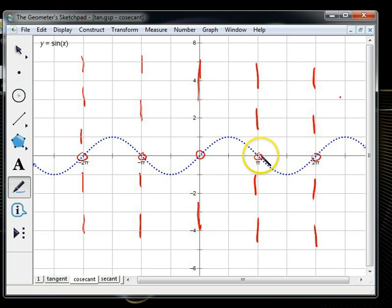Now between 0 and pi, sine is increasing and decreasing, but it's positive, so the reciprocal will do the opposite. It will stay positive, but it will decrease, and then the reciprocal of 1 is 1, so it shares that point, and then when sine decreases, cosecant will increase.